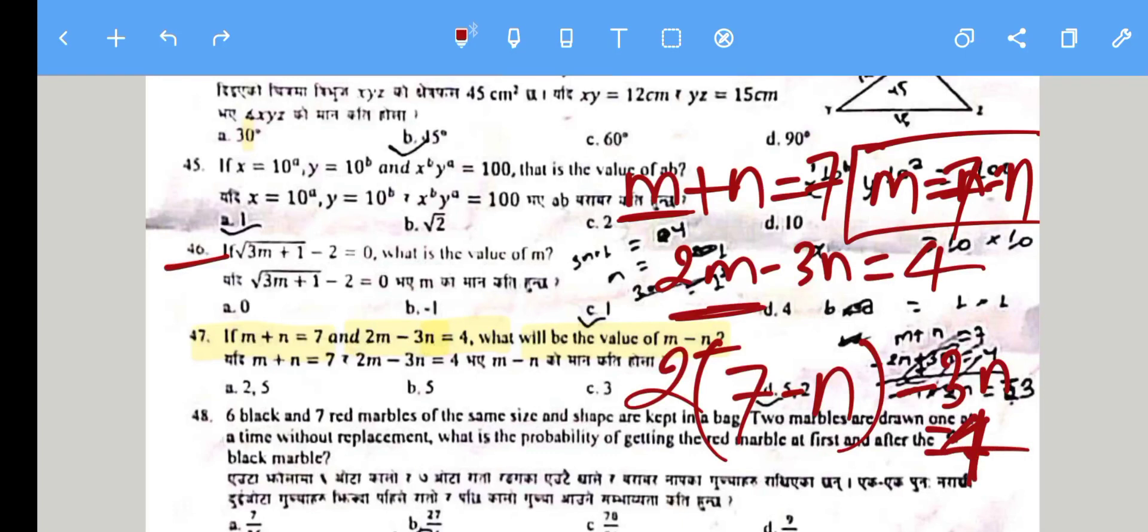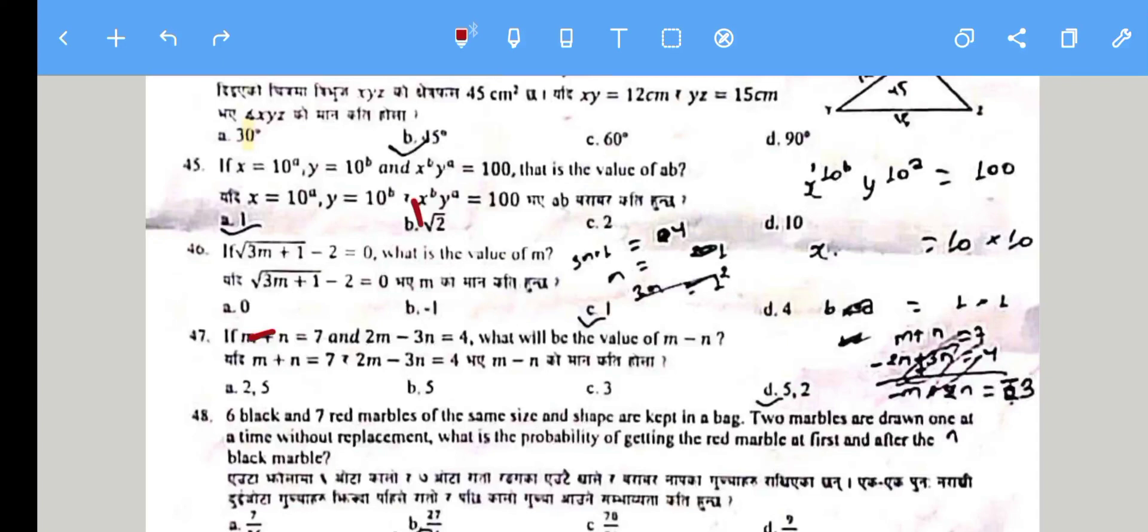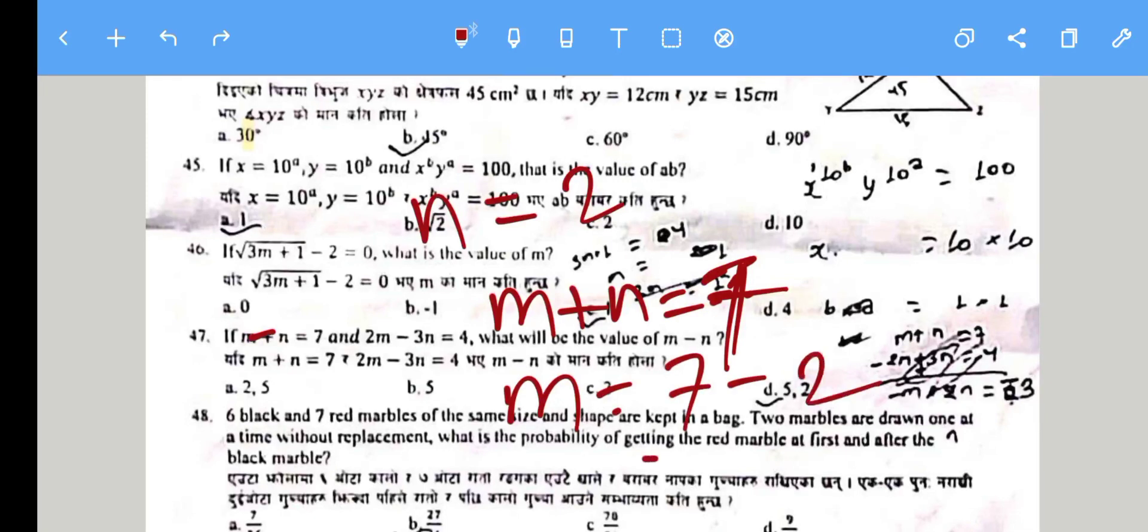This gives 14 - 2y - 3y = 4, so -5y = -10, therefore y = 2. Substituting back: x + 2 = 7, so x = 5.